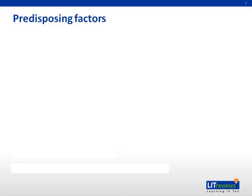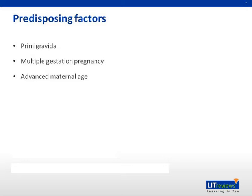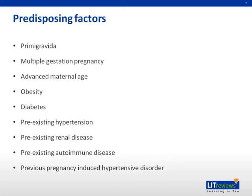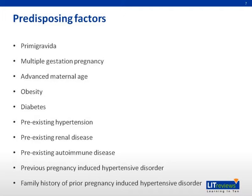Predisposing factors include prima gravida, multiple gestation pregnancies, advanced maternal age, obesity, diabetes, pre-existing hypertension, pre-existing renal disease, pre-existing autoimmune disease, previous pregnancy-induced hypertensive disorder, and family history of prior pregnancy-induced hypertensive disorder.